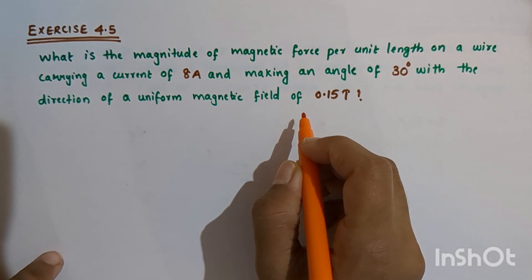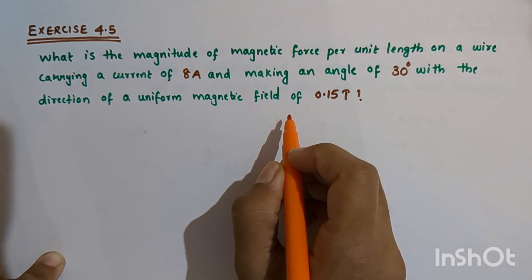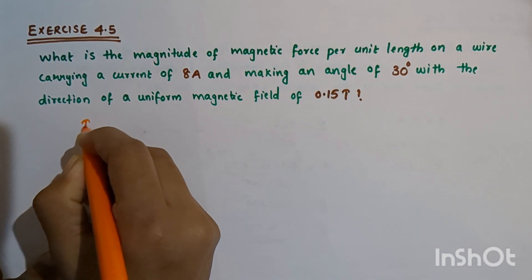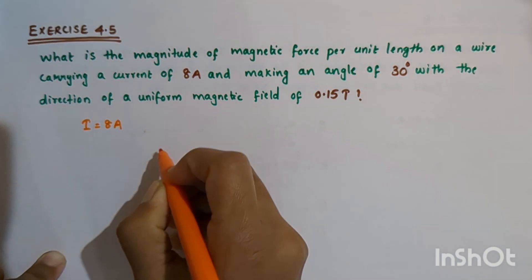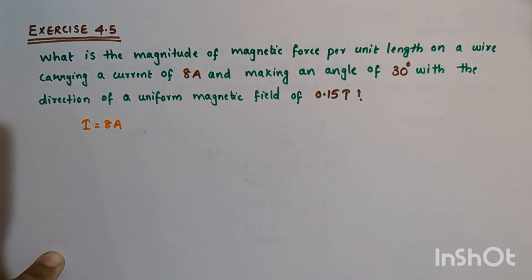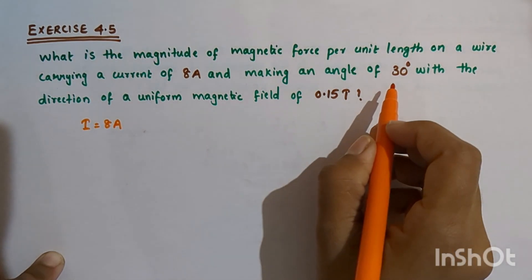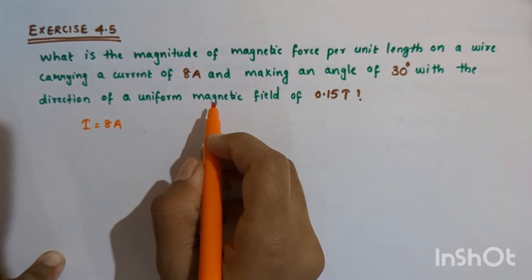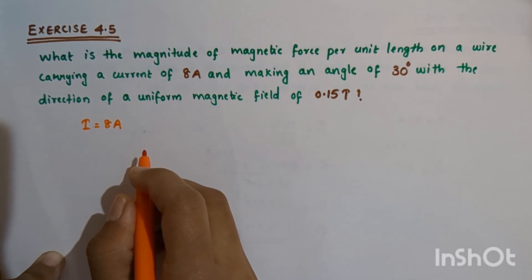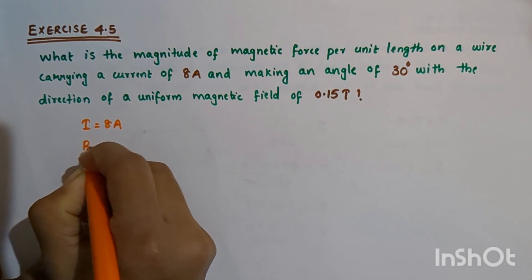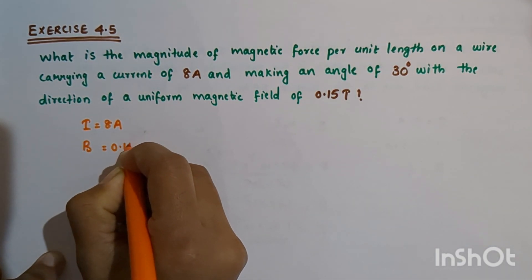In this question, there is a current carrying wire which carries a current I equals 8 ampere. This current carrying wire makes an angle of 30 degrees with the direction of a uniform magnetic field of 0.15 tesla.